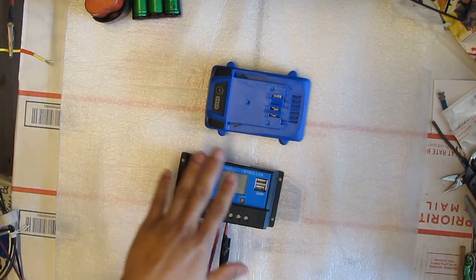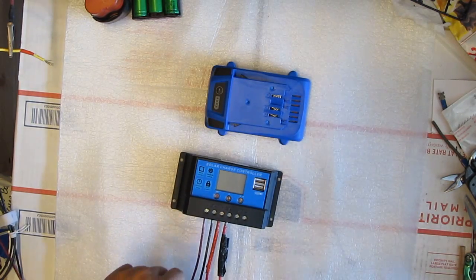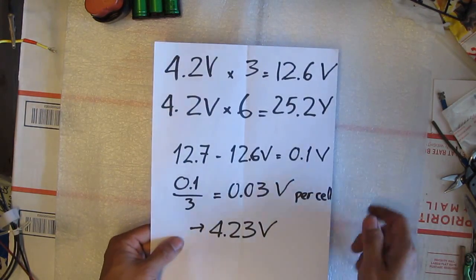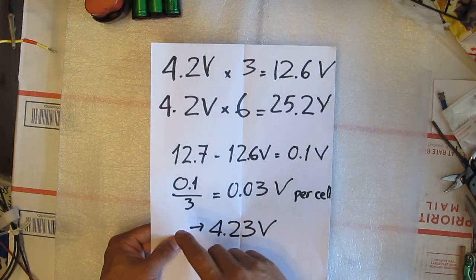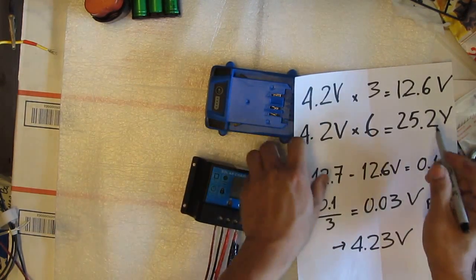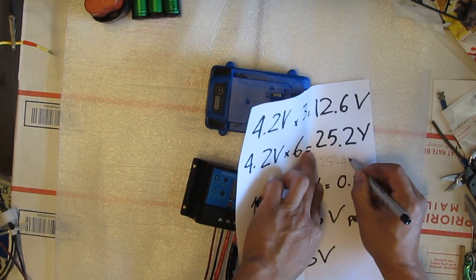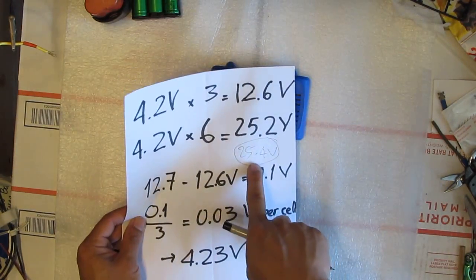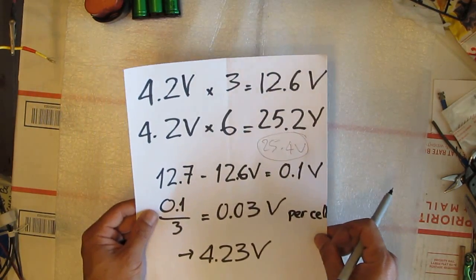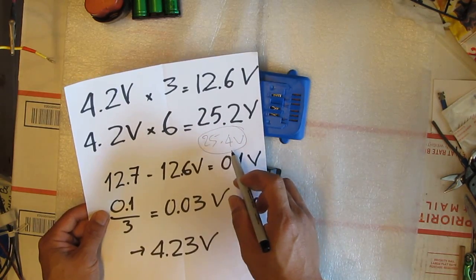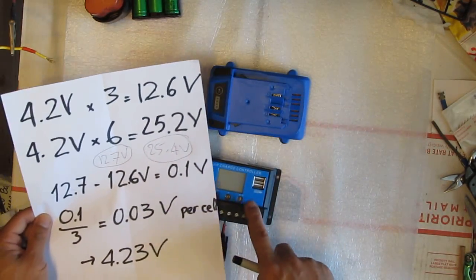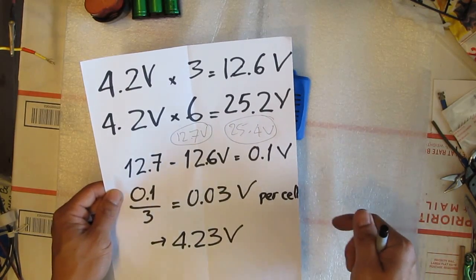Alright. So as you saw in the video, the controller was charging my 24-volt lithium-ion battery pack just fine. And let me show you the calculation here. So I got six cells. The controller is charging my battery at 25.4 volts. This is the lowest voltage that this controller can go for a 24-volt system. And I can't go any lower, same as the 12-volt system. So for a 12-volt system, this controller can go as low as 12.7 volts. And it doesn't go any lower.